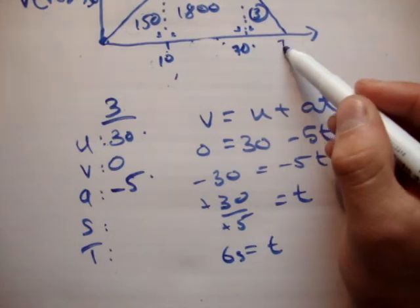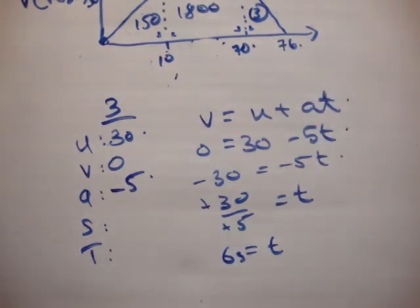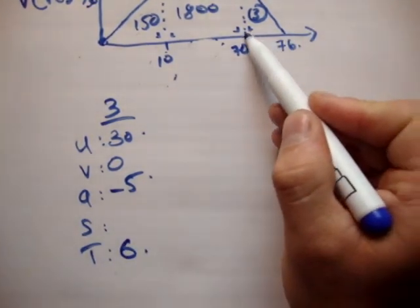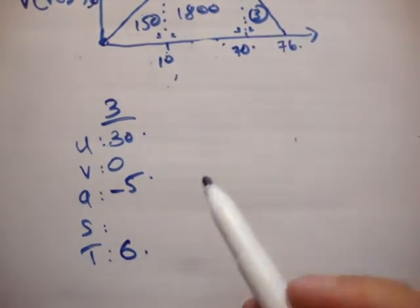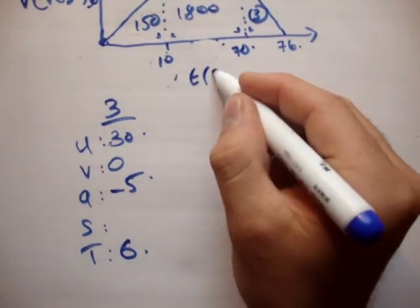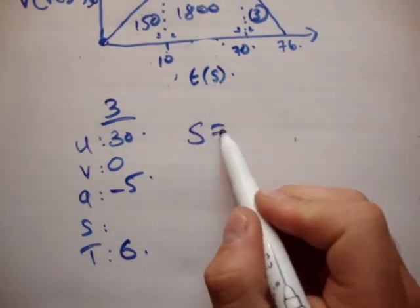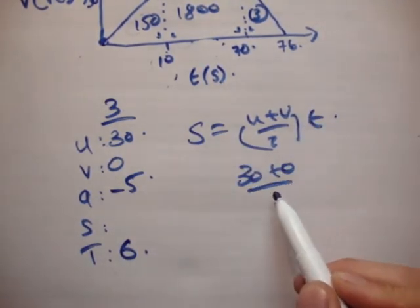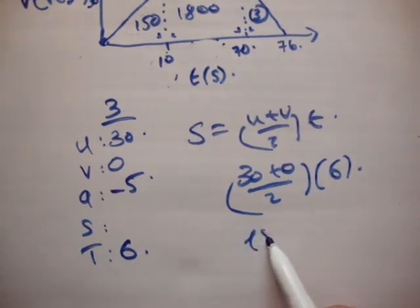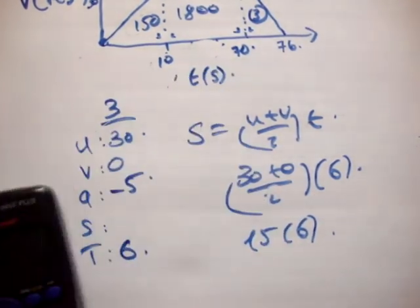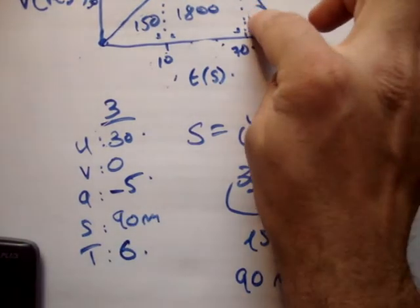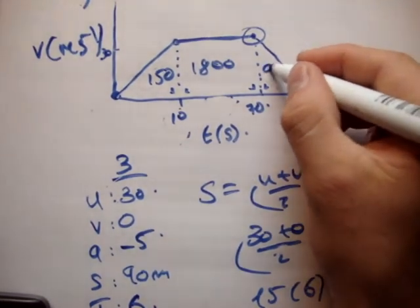Okay, so that means this here is 76. By the way, it's 76 because between here and here is 6 seconds. So in total, that position on the t axis is equal to 76 seconds. Finally, we get s by going u plus v over 2 times the time. 30 plus 0 over 2 times 6, so that's 15 times 6. Let's just have a gander in the calculator. That gives me 90 meters. So we'll just finish off this here by saying the area of that triangle is 90 meters.